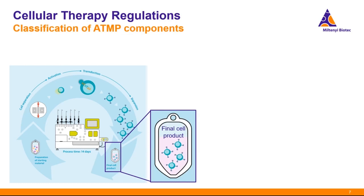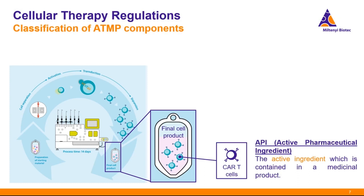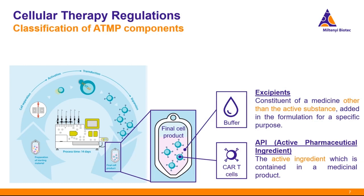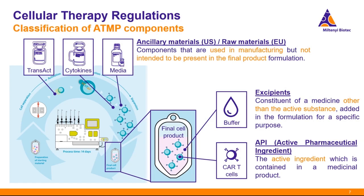The cells in the final product are called the API — the active pharmaceutical ingredient — which is essentially the active part of the drug. The buffer in which the cells are contained is the excipient: anything in the final cell product that is not the active substance. When we talk about clinical grade cytokines, these are so-called ancillary materials — or raw materials in the European Union — which are components used during the manufacturing of the cellular product but are not intended to be present in the final product formulation. Because of this, different regulations apply to them.